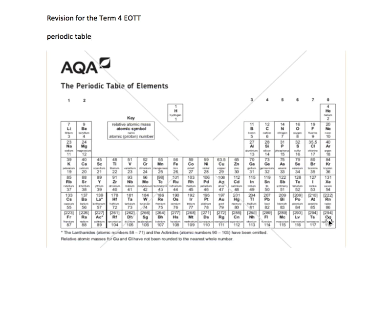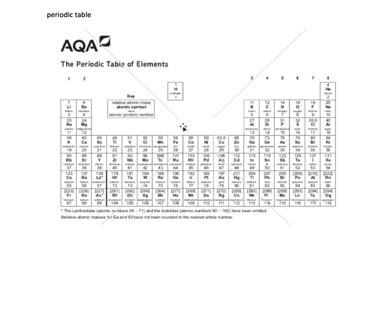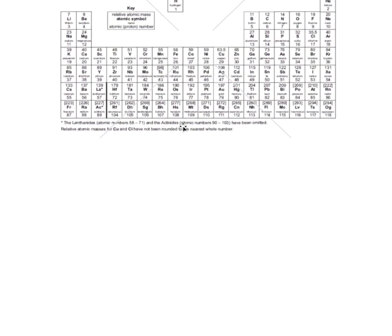So there you have your periodic table. The groups are vertical, the periods are horizontal, and when you go from one period to the next, what you're doing is starting a new shell of electrons.